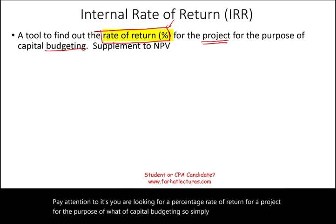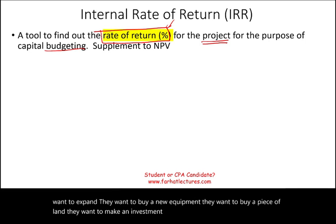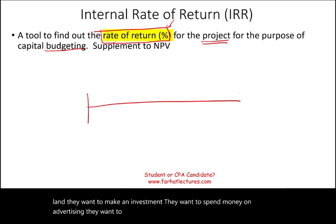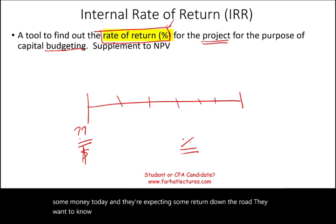Simply put, a company might want to expand. They want to buy new equipment, buy a piece of land, make an investment, spend money on advertising. They want to find out: if they do so, they're going to have to put out some money today and they're expecting some return down the road. They want to know what percentage is the rate of return on that project.